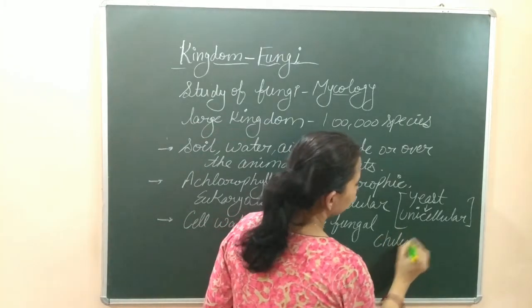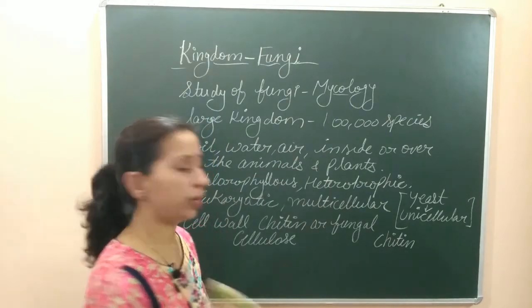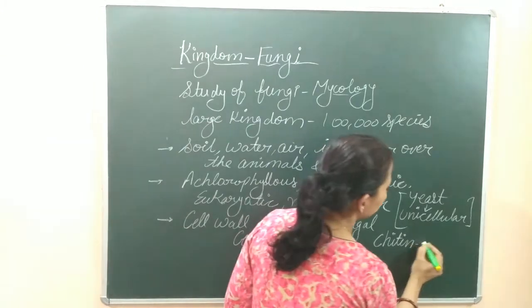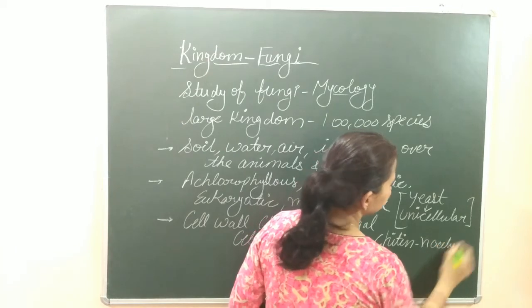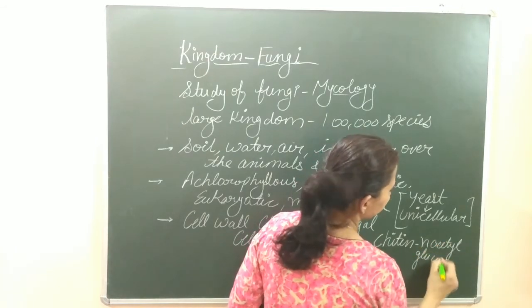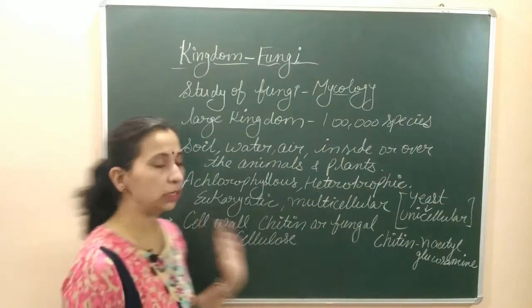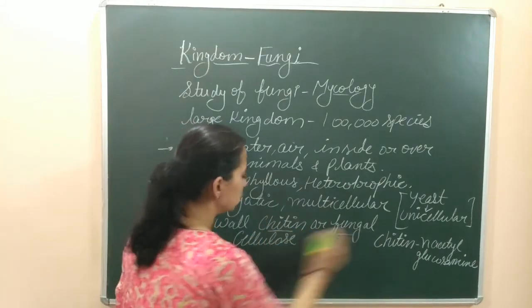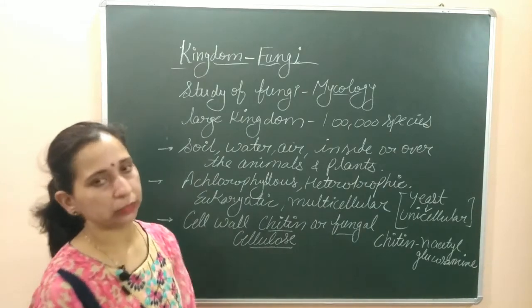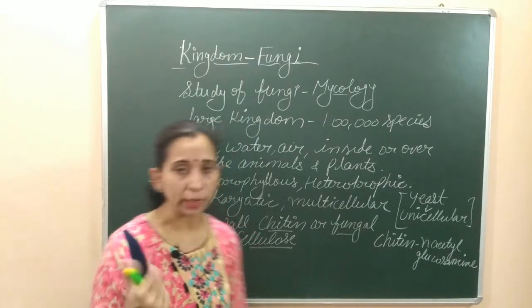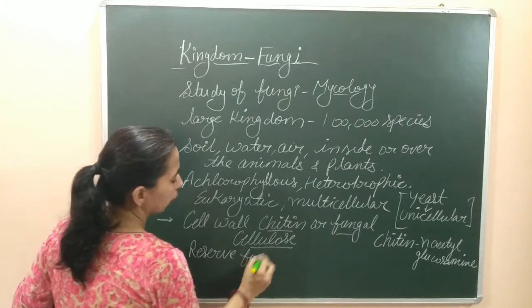Chitin is a polysaccharide of N-acetyl glucosamine. In some cases, fungal cellulose can also be present. This fungal cellulose is different from the plant cellulose found in plant cell walls. The cell wall is formed of chitin or fungal cellulose. The fungus stores its food in the form of glycogen.